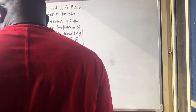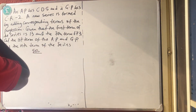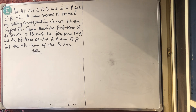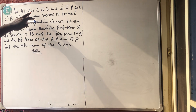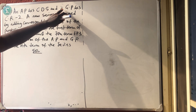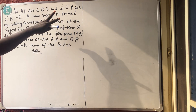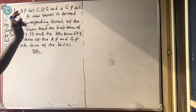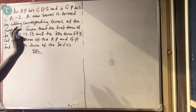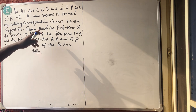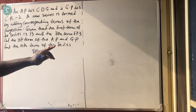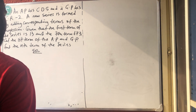Good morning and welcome to Master Talker online class. Today we'll be solving these simple questions someone gave us. The question says that we have an AP with common difference 5 and a GP with common ratio minus 2. A new series is formed by adding corresponding terms of the progressions. Given that the first term of this new series is 13 and the seventh term is 673, calculate the first term of the GP and AP, and equally find the nth term of the new series.